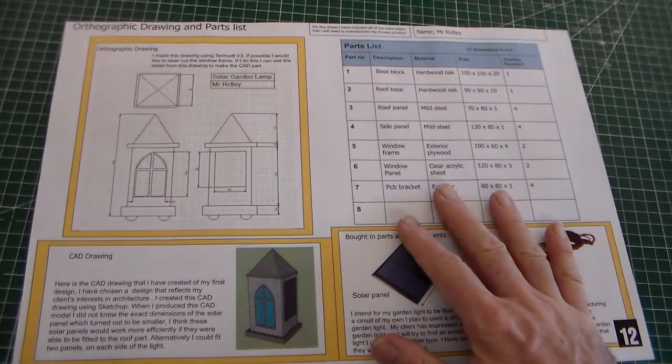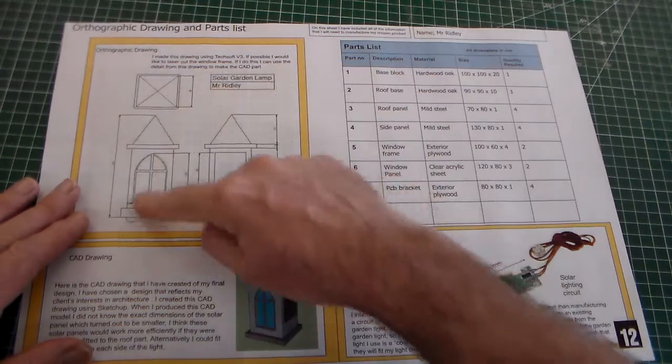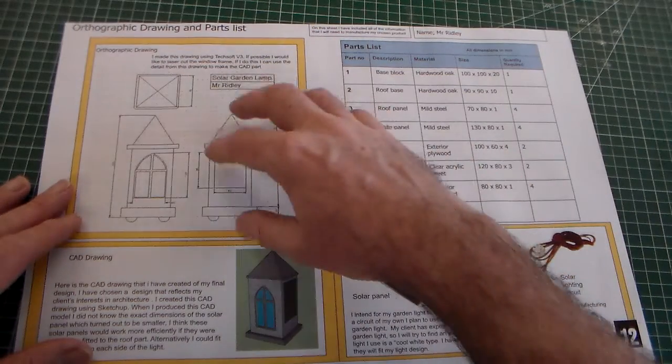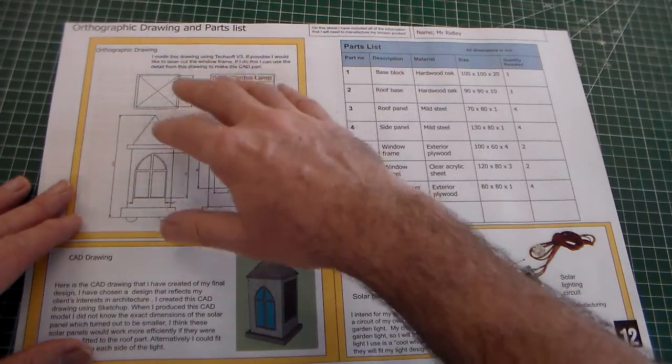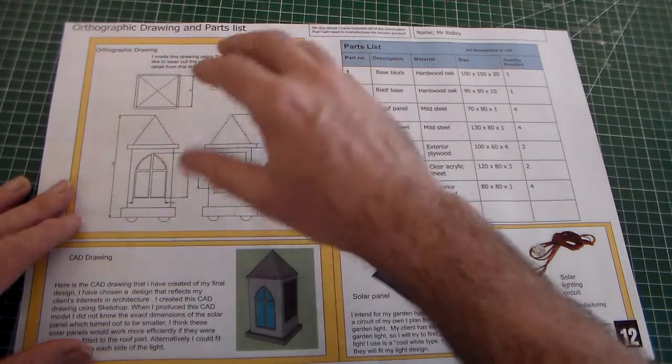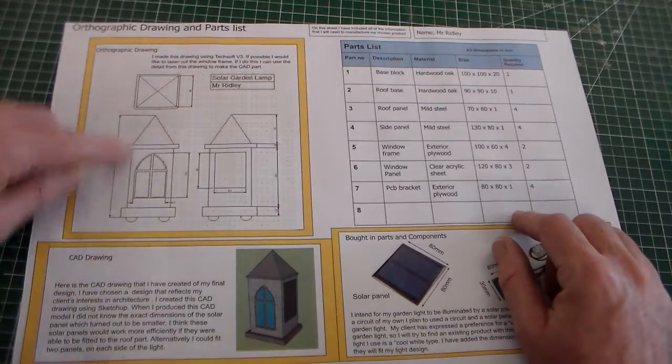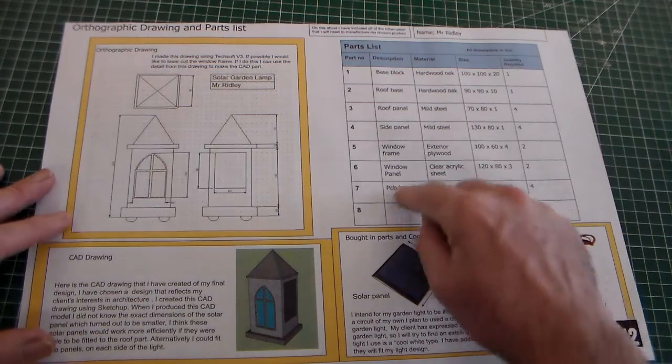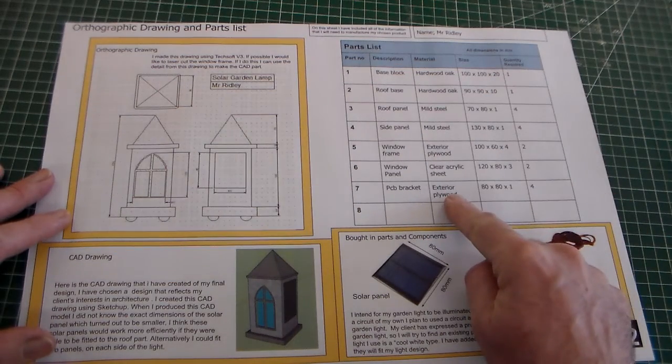What do we have on this sheet? We have a measured drawing, a formal drawing using orthographic projection and correct conventions, with three views and dimensions. We also have a parts list with materials selected.